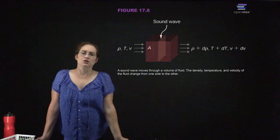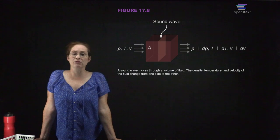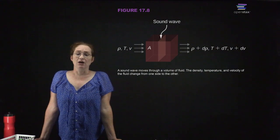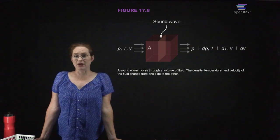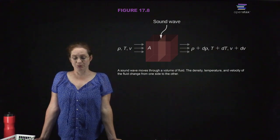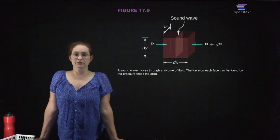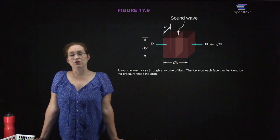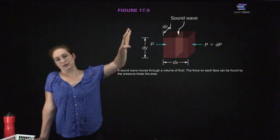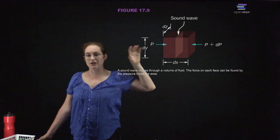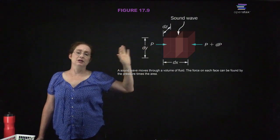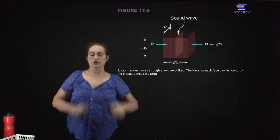When you have a sound wave moving through a fluid — and remember, air is an example of a fluid — the density, pressure, and velocity of the fluid change from one side to the other as the pressure wave moves through. You could in principle calculate the pressure, calculate the force on each different side of a cube you're drawing, and that is what is actually pushing the molecules and atoms in the air in order to create these bunches.